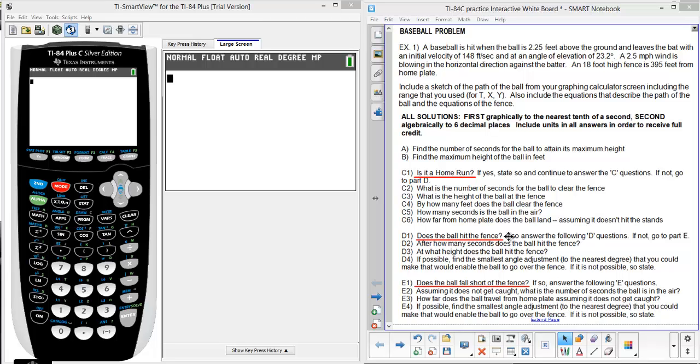A 2.5 mile per hour wind is blowing in the horizontal direction against the batter, and an 18 foot high fence is 395 feet from home plate. What we want to find out is: is it a home run, does the ball hit the fence, does it fall short of the fence, what's the maximum height, all these other different questions.